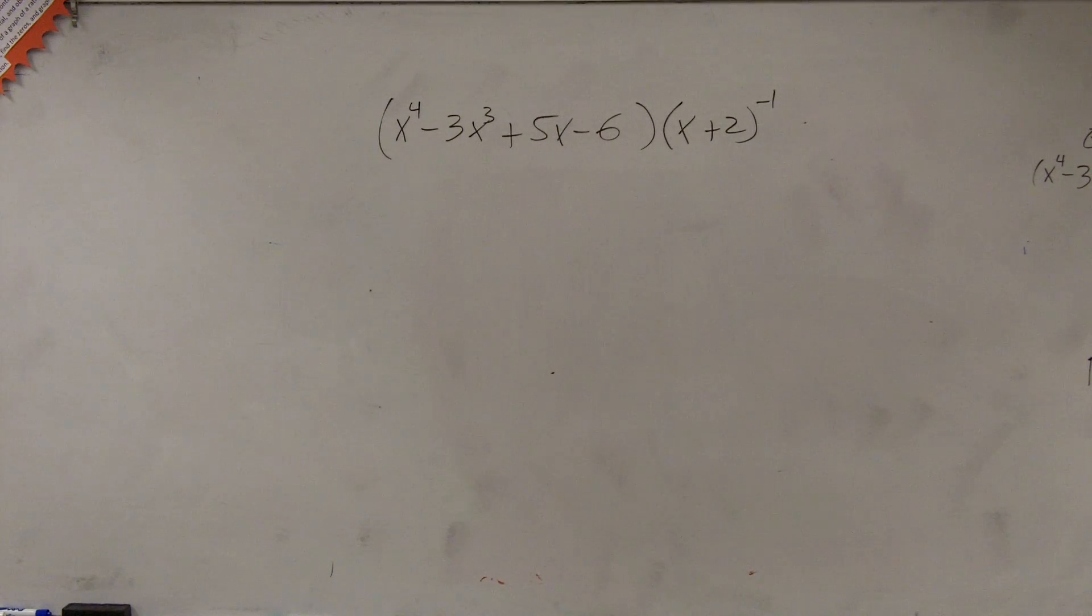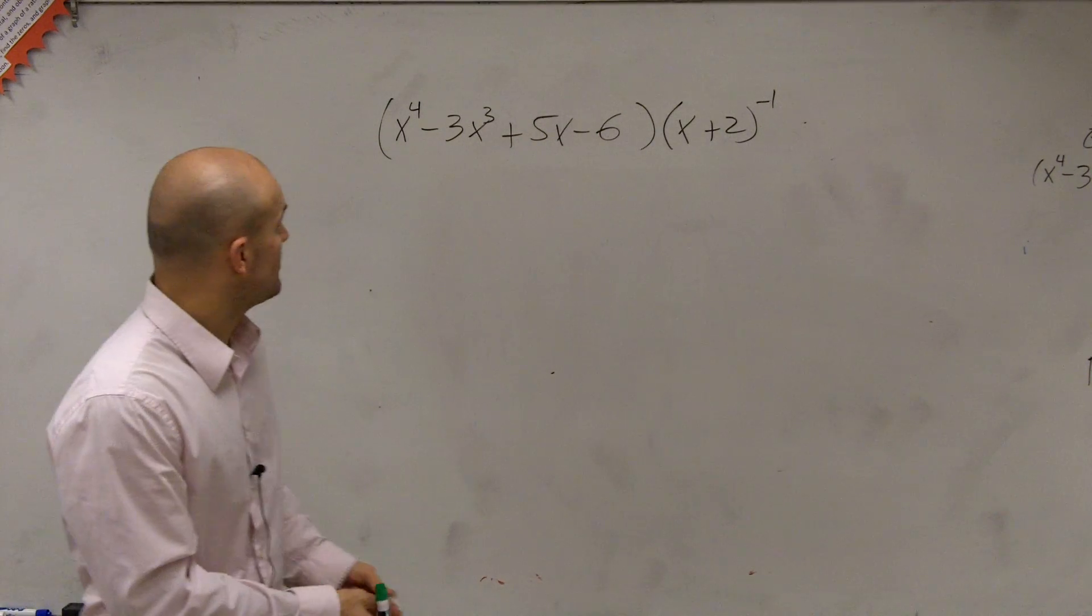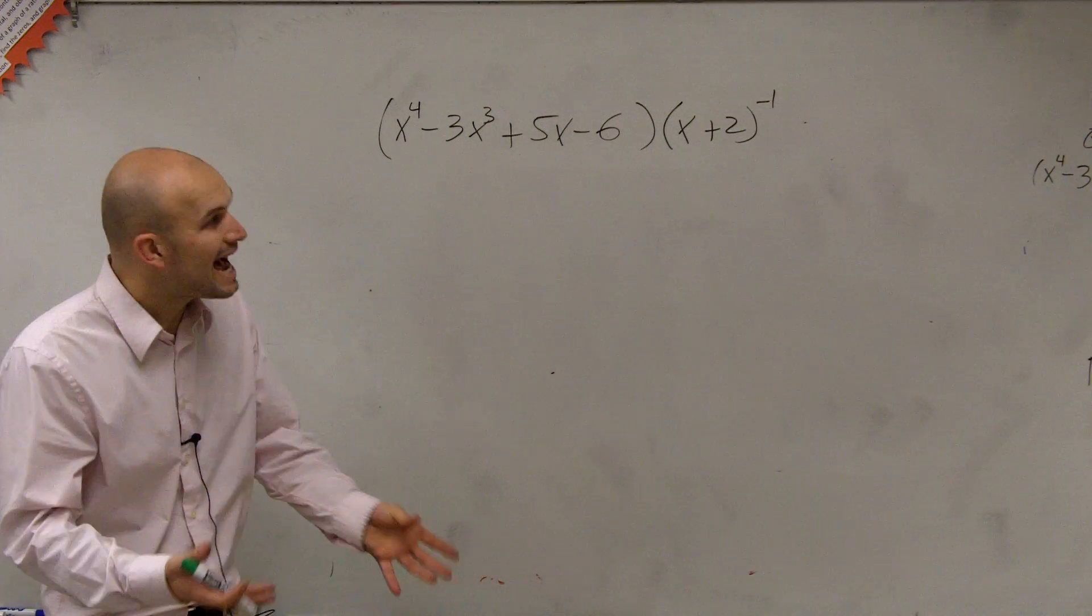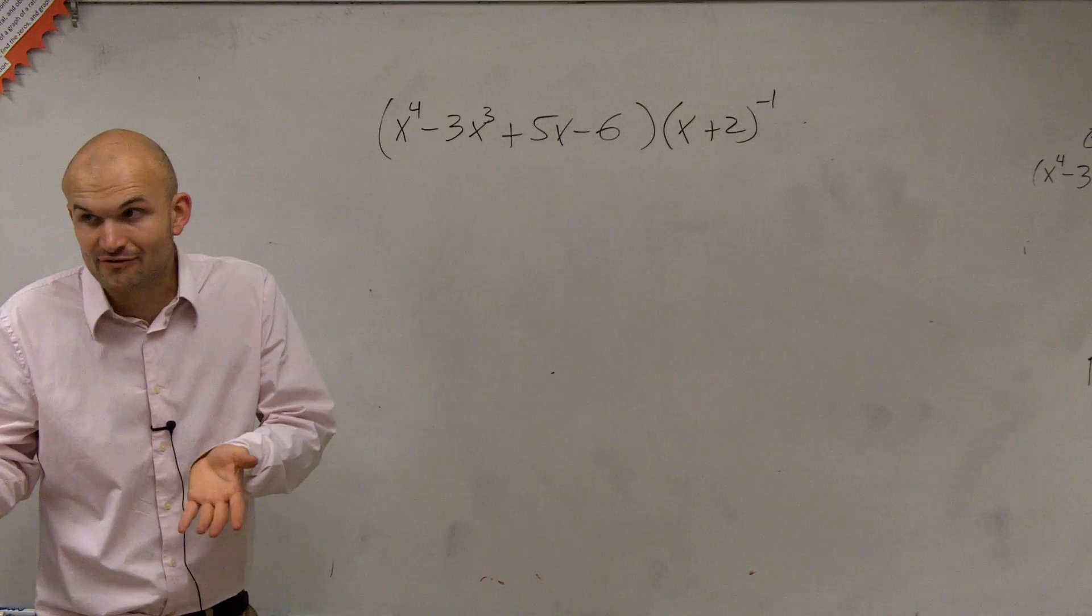You just got to set it equal to 0. So for this example, we have x to the fourth minus 3x cubed plus 5x minus 6 times x plus 2 to the negative first power.